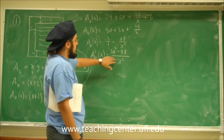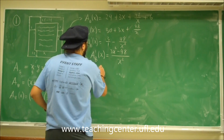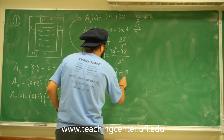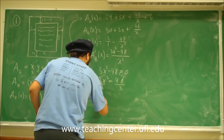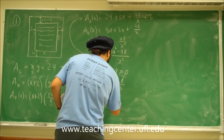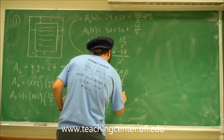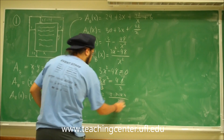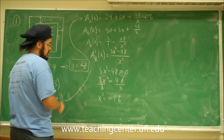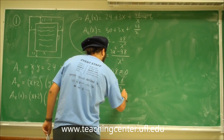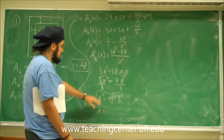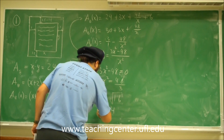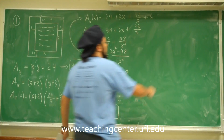Setting the numerator equal to zero: 3x² − 48 = 0, so 3x² = 48, which means x² = 16. Taking the square root of both sides gives plus or minus 4, but minus doesn't make sense for a side length, so x = 4.